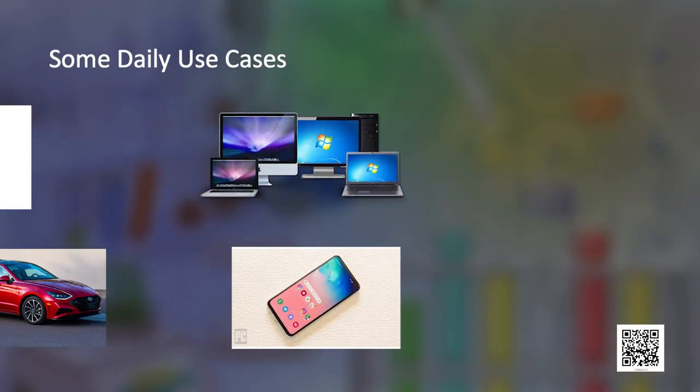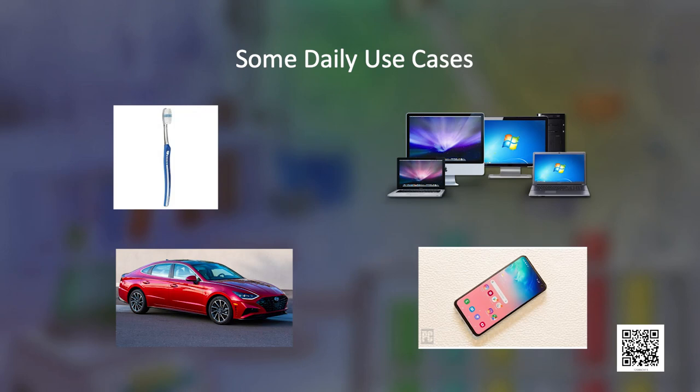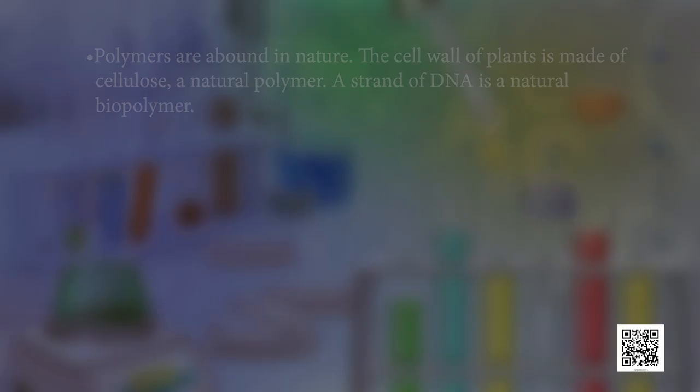Hello learners, today we will discuss about the chapter polymers. Have you ever wondered that from a toothbrush to synthetic clothes to automobiles to electronic gadgets like mobile phones, computers to life-saving silicon heart valves — polymers are used in almost every material we encounter on a day-to-day basis.